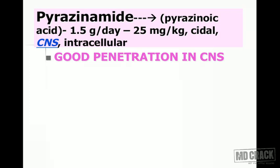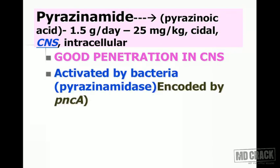Among all anti-tuberculosis drugs, pyrazinamide has the best penetration into the central nervous system. Therefore, in CNS tuberculosis there is no substitute — pyrazinamide must be used. The drug is activated inside bacteria by the enzyme pyrazinamidase, converting it into pyrazinoic acid.